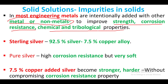Aluminium is used for engine cylinders, but at high temperature it can melt. So some metals or non-metals are added to automatically improve strength, corrosion resistance, and chemical and tribological properties.